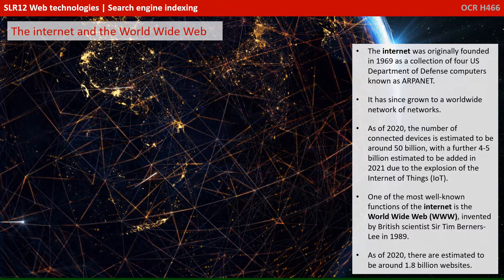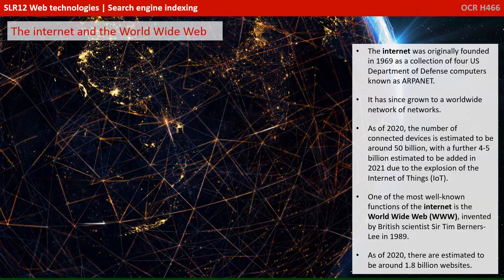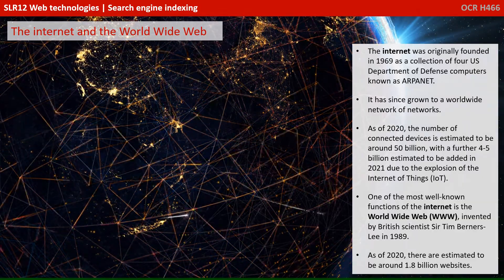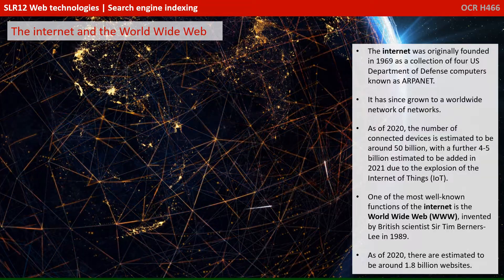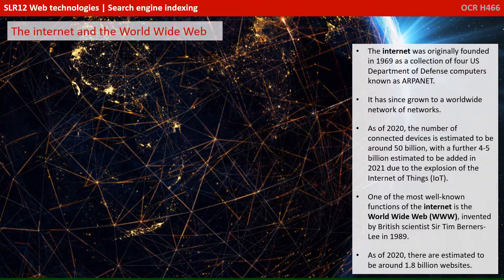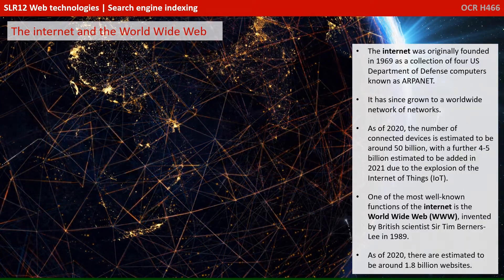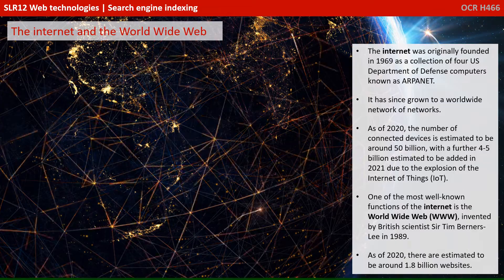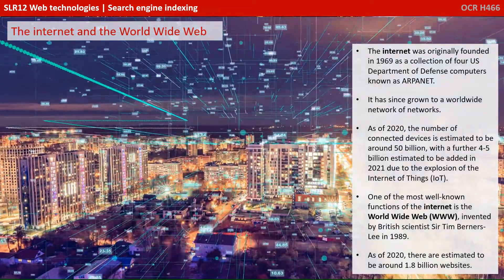The Internet was originally founded in 1969 as a collection of four US Department of Defense computers known as ARPANET. It has since grown to a worldwide network of networks. As of 2020, the number of connected devices is estimated to be around 50 billion, with a further 4 to 5 billion estimated to be added in 2021 alone due to the explosion of the Internet of Things.